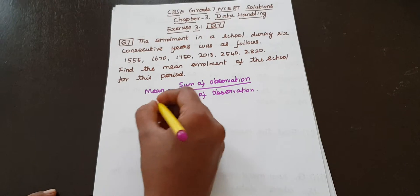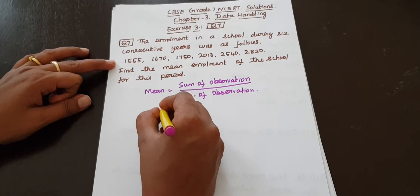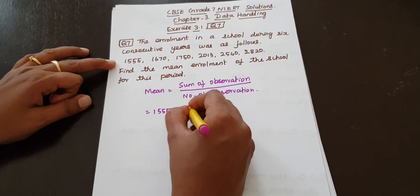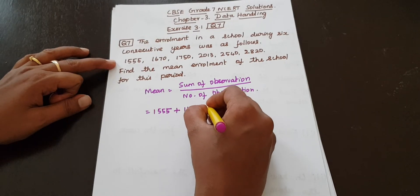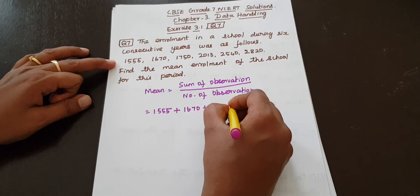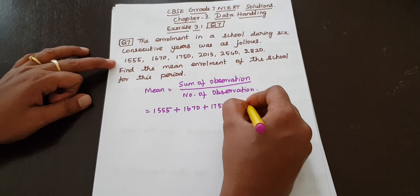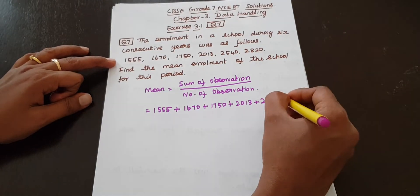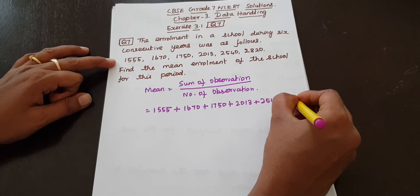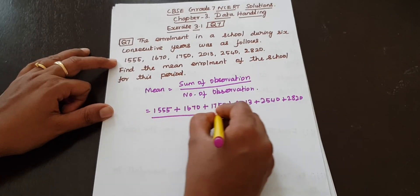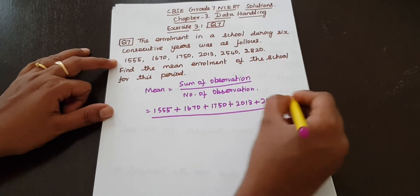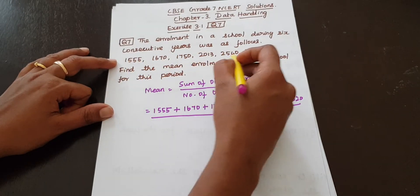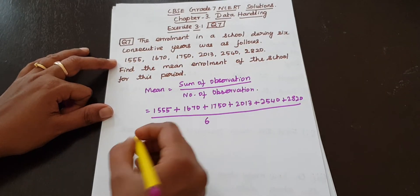So sum of observations: 1555 plus 1670 plus 1750 plus 2013 plus 2540 plus 2820. Divided by number of observations — 1, 2, 3, 4, 5, 6. Number of observations is 6.